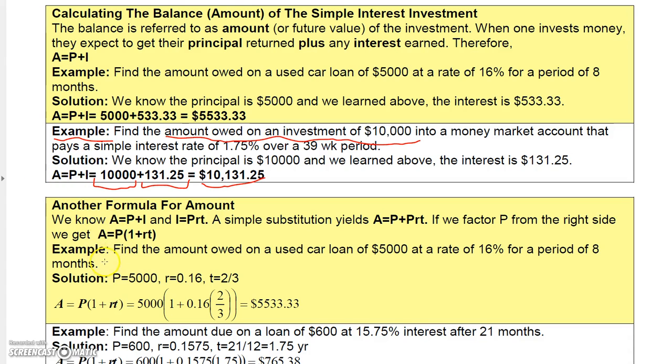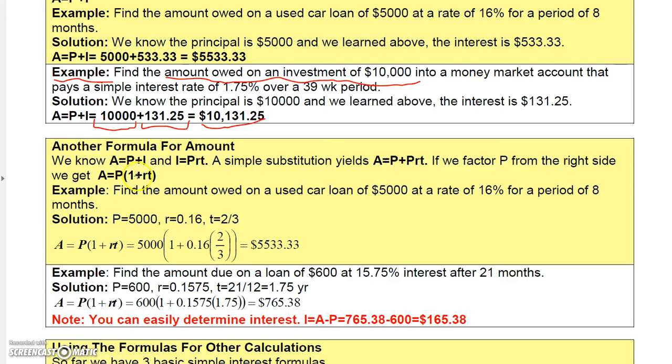Now that actually allows me to develop another formula. Since amount is principal plus interest and interest is PRT, then we can say that amount is principal plus PRT. And then if you factor the P out, you get this. Now this formula is not a great revelation, but it does allow you to calculate the amount without actually knowing what the interest is.